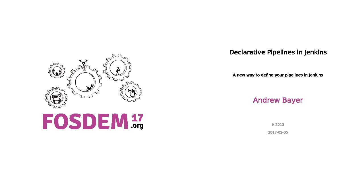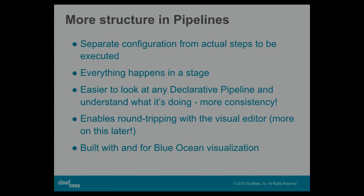In a declarative pipeline, everything happens in a stage — there's nothing running outside of stages. This works better with visualization, including the existing StageView plugin and the Blue Ocean UI for Jenkins, which is currently in beta. It's easier to look at any declarative pipeline and understand what it's doing than it is with a scripted pipeline, because it follows certain rules — it's more like configuration.